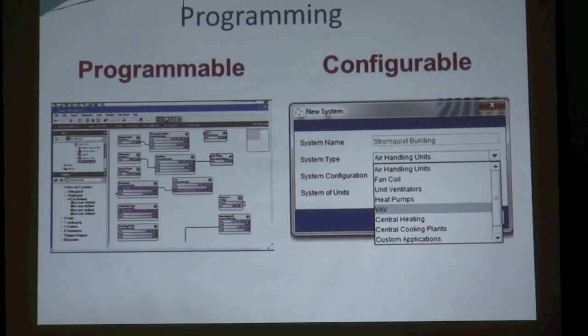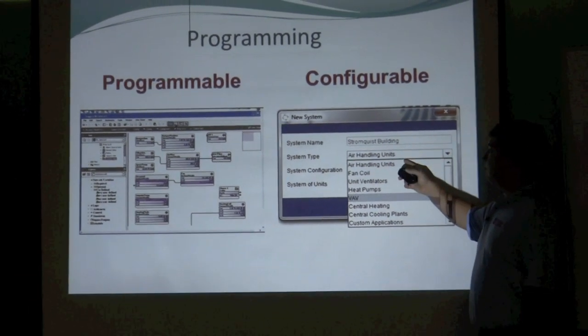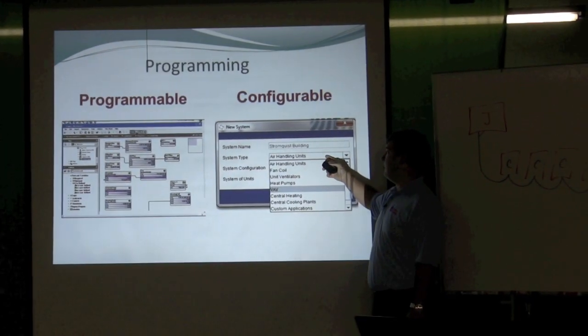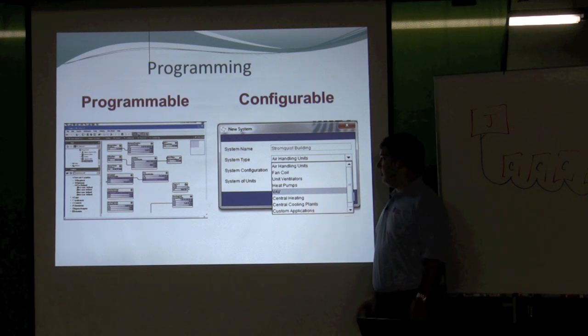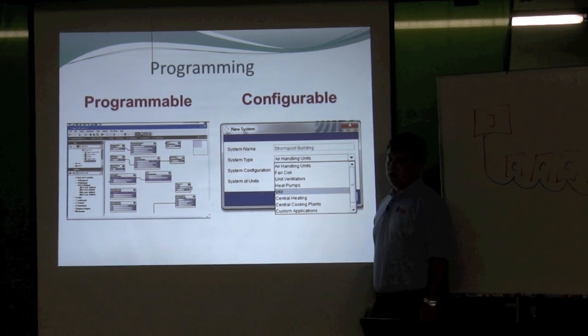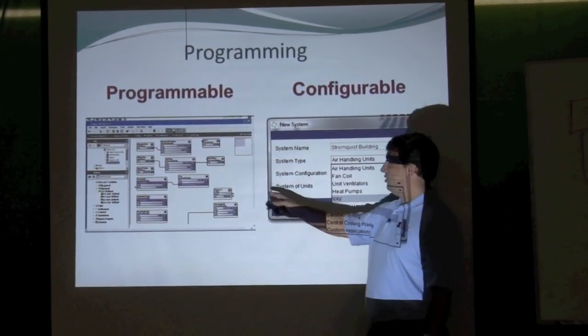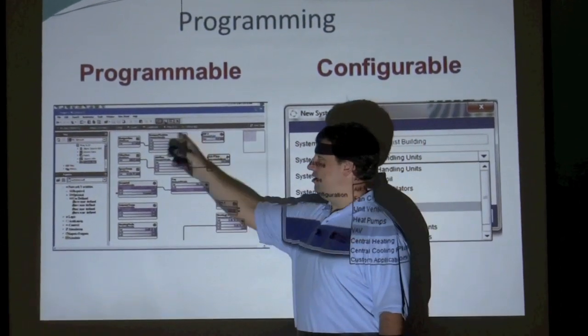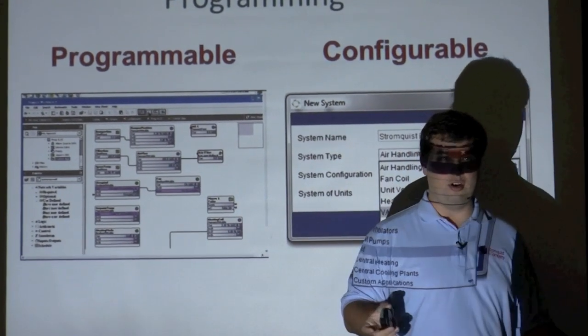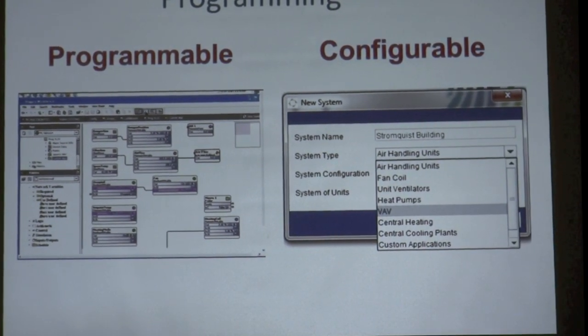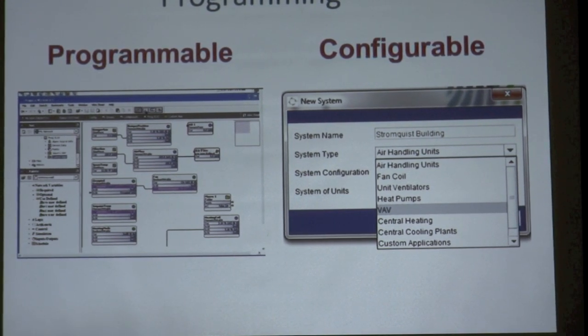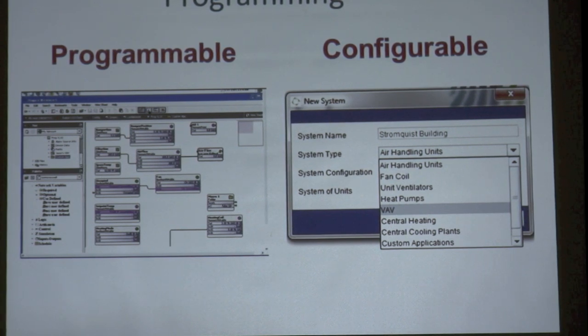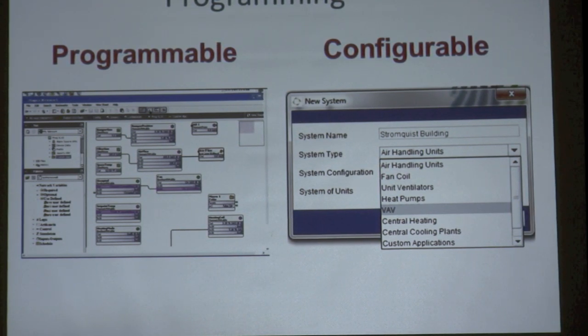Alright, programmable is on the left, configurable is on the right. The reason it's configurable is because you have options. So it's asking you what do you want to do. You know, system type, it's a VAV. But if you didn't quite know, at least you're kind of getting some help here. That you know it's one of those things. When you start over here on this side, this is called a wire sheet. None of this is here. And you just start. So you go in there and you go, I need to be able to know what this space temp is. I need to be able to know that it's a VAV. And you're pulling blocks of logic and points and all that stuff out and putting it out there. Once you get the hang of it, programmable is great.